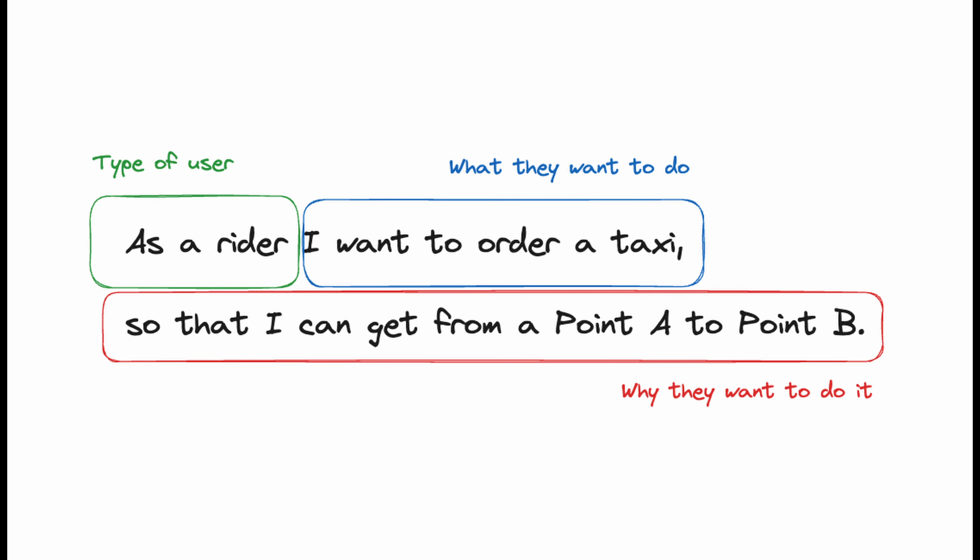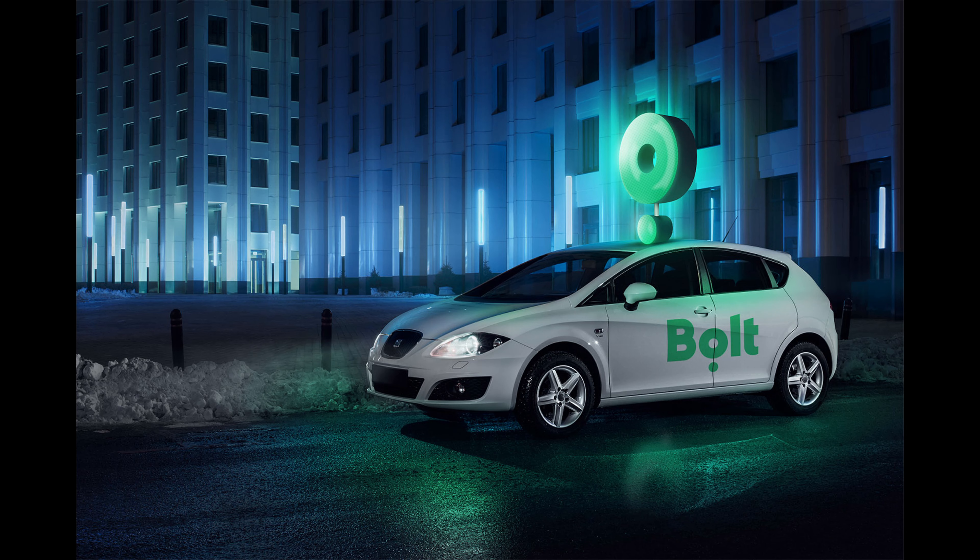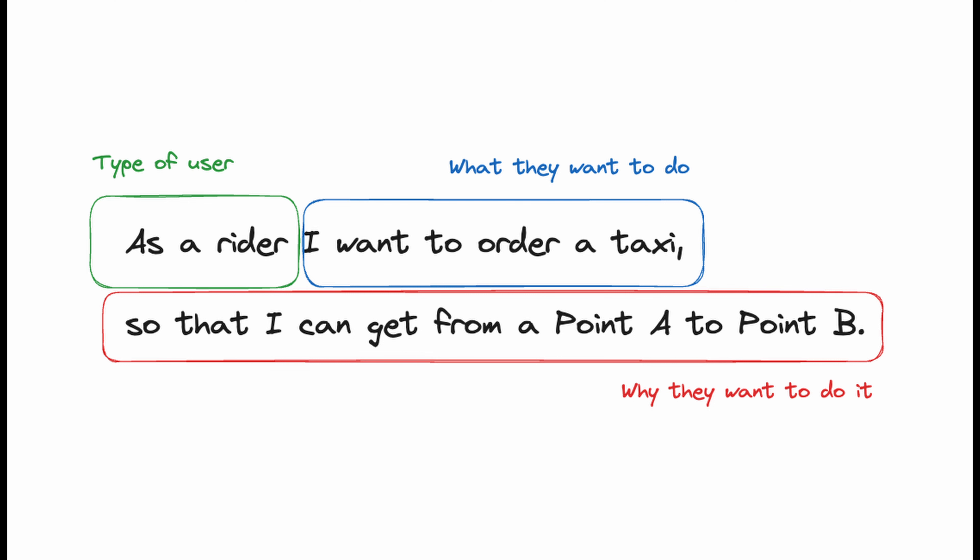Next, indicate what they want to do — as a rider, I want to order a taxi. Then you have the third part responding to why they want to do that, which in our case is 'so that I can get from point A to point B.' This part clearly indicates the value of the user story to the user.